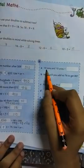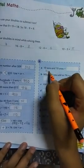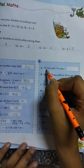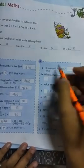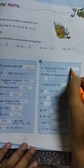Next question, 10 tens and 10 ones. 10 tens is 100. In one ten, there is 10. In 10 tens, 10 tens are 100, plus 10 ones. Answer is 110.